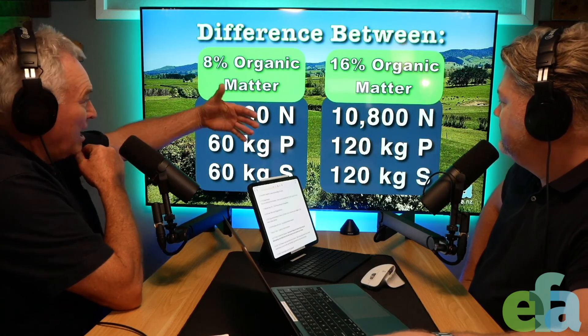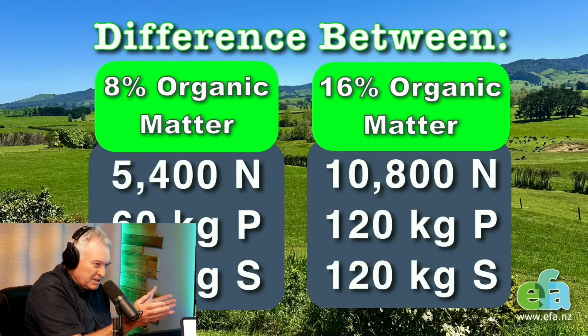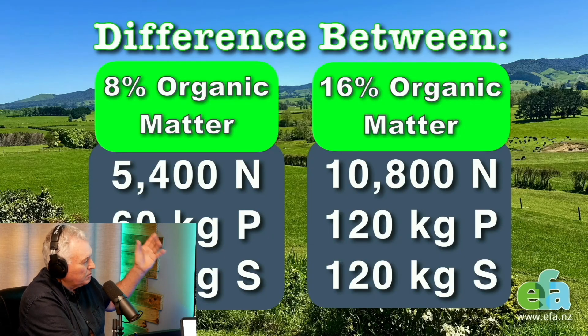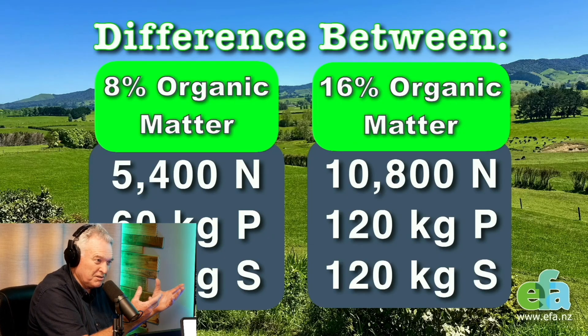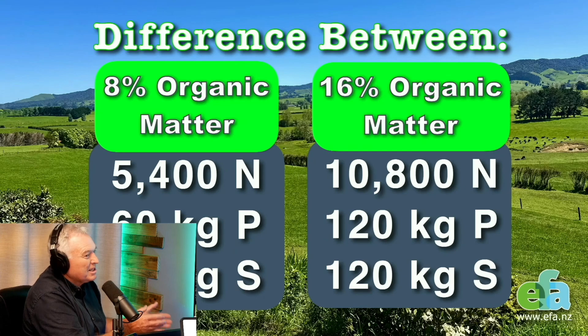My water test showed 0.07 parts per million of nitrate nitrogen leaving the farm. You've got it in a form that's really locked into the organic matter — it's in the soil. What happens with organic matter is when it oxidizes, when it gets hot over summer, it oxidizes off and releases the minerals. The carbon dioxide then becomes available for the plant because it's got to photosynthesize, and then the minerals become available in the soil.